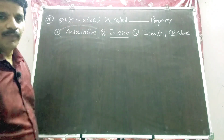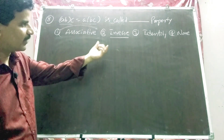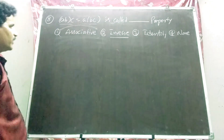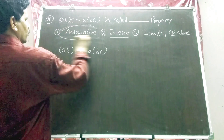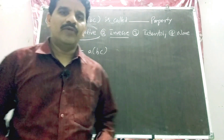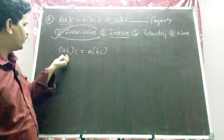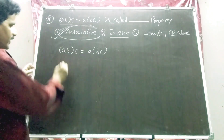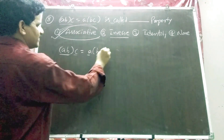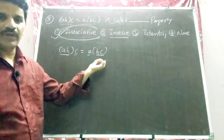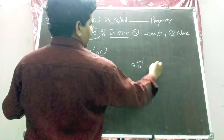Question 8: if (a·b)·c = a·(b·c), this is called which property? Options: associative, inverse, identity, or none. We know that (a·b)·c = a·(b·c) is the associative property, because whenever you have three elements and you can regroup them this way, that is associative. Inverse means a × a⁻¹ = e, which is the identity element.